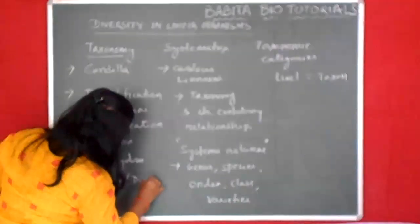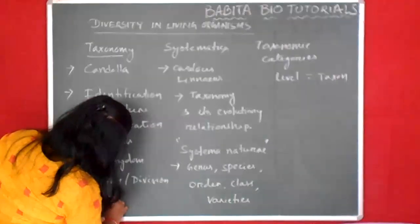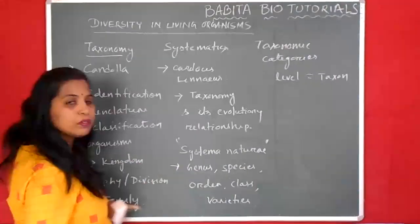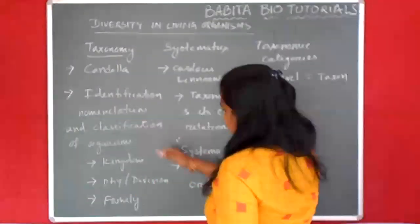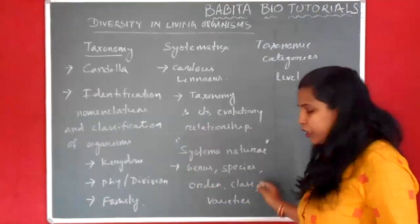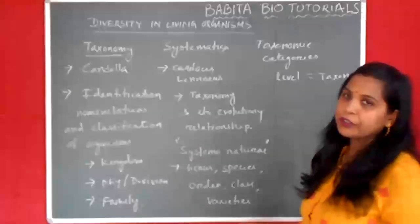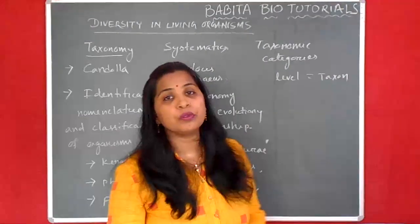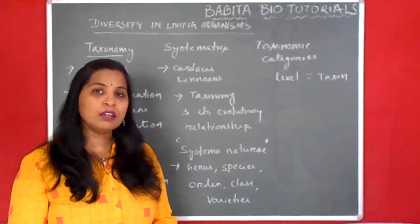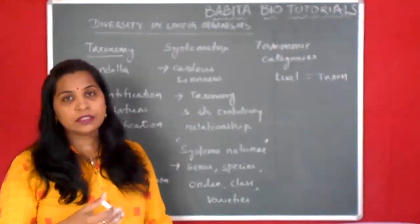Carolus Linnaeus also used division and family. These three — division, family, and kingdom — are newly added levels, whereas the original five were given by Linnaeus. Based on taxonomy categories, we arrange organisms in a hierarchical order, either in ascending or descending order.